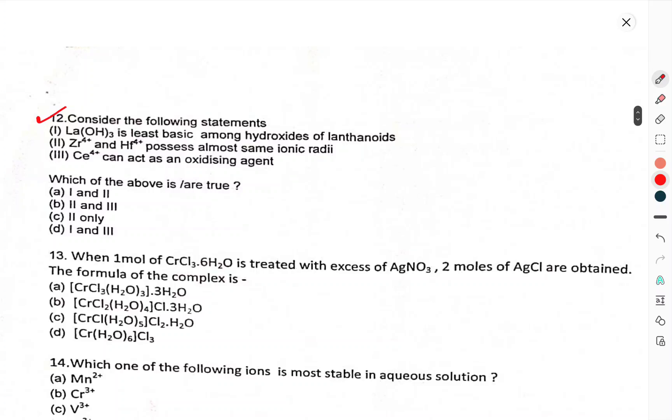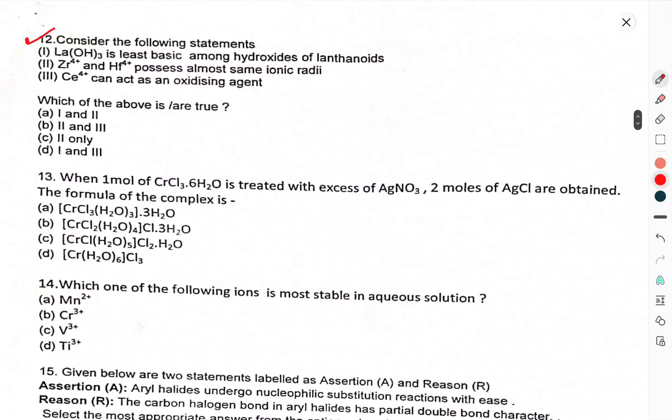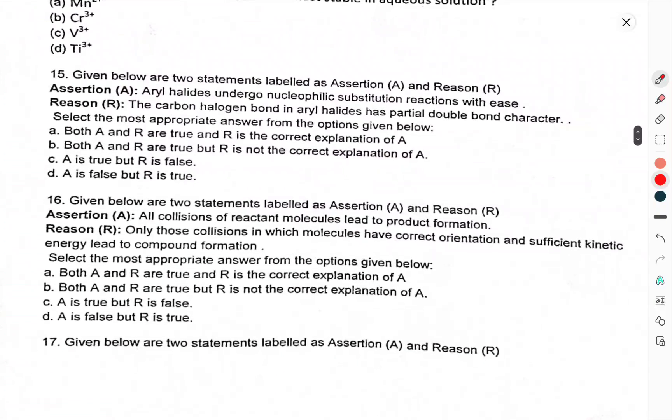Consider the following statements. Which of the statements is true? Question 13: A mole of CrCl3·6H2O is treated with excess AgNO3. 2 moles of AgCl is obtained. The formula of the complex is. Question 14: Which one of the following ions is most stable in aqueous solution?